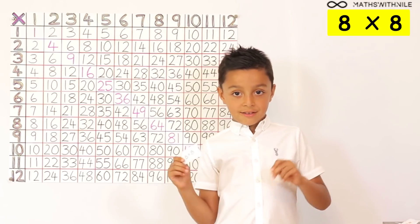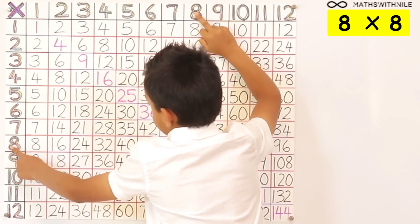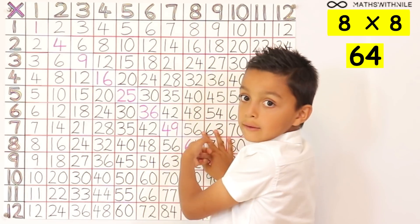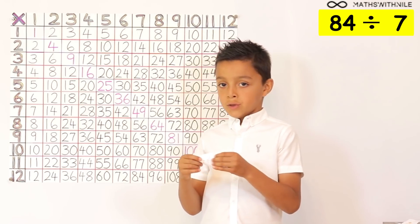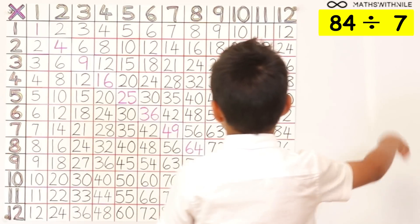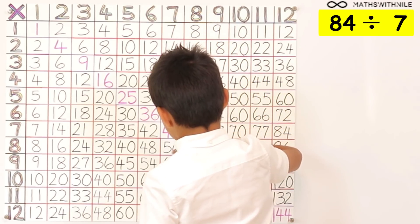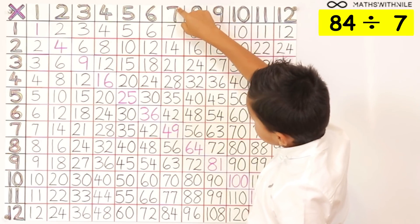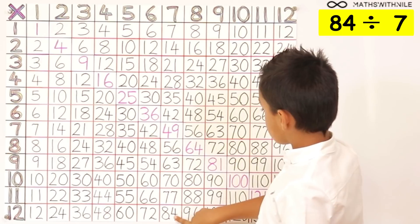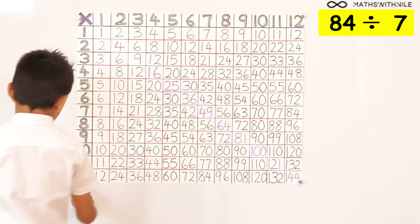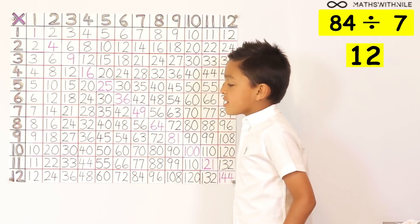8 times 8 equals 64. Very good. Next: 84 divided by 7. I'll go to my 7 times table and go down until I find 84, then go to the side and the answer is 12. So 84 divided by 7 equals 12.